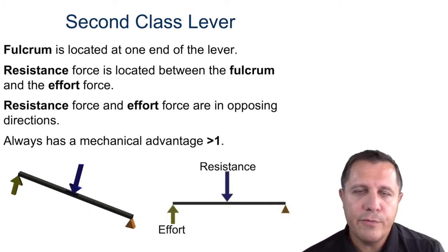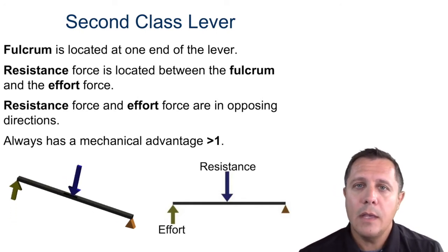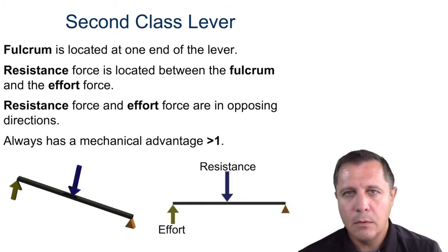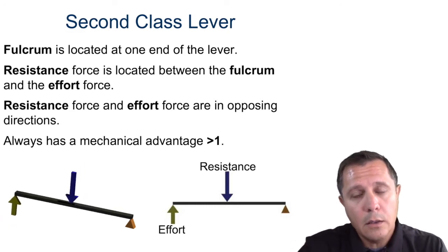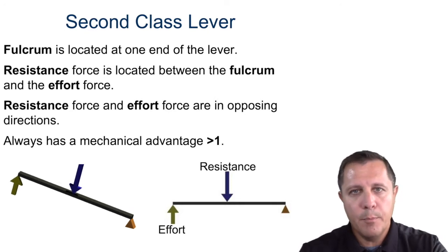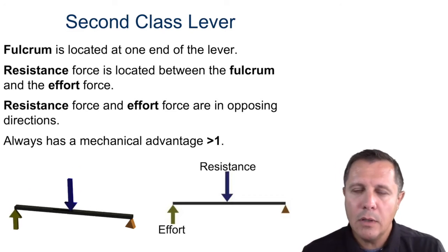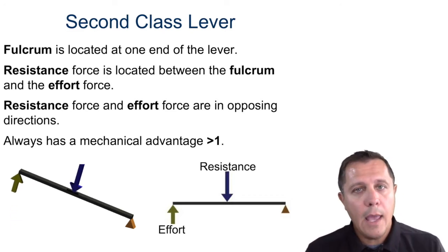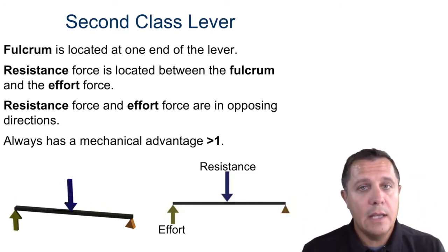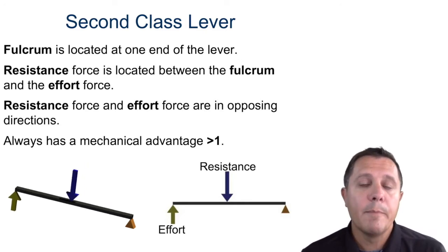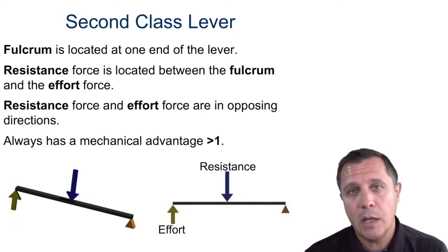Now, second class lever. The fulcrum has to be on one end and the effort has to be on the other end. Think of this as a wheelbarrow — you would be on one end lifting it up, the fulcrum would be the wheel on the other side, and the really heavy load would be in the bucket getting lifted up. You have a greater effort distance, which means less force is required — so the IMA of a second class lever always has to be greater than one.